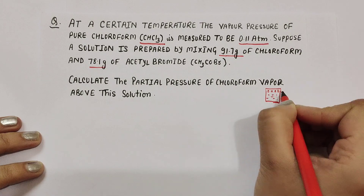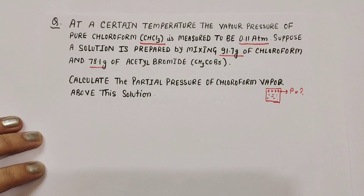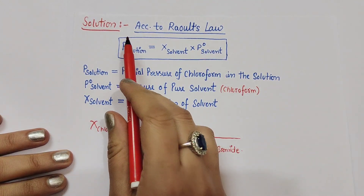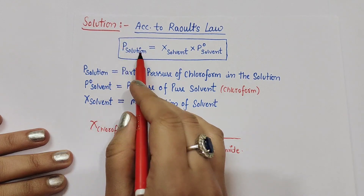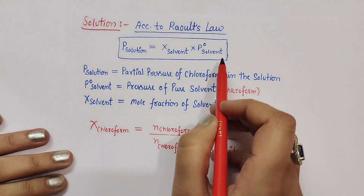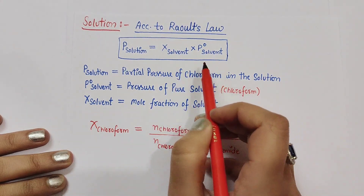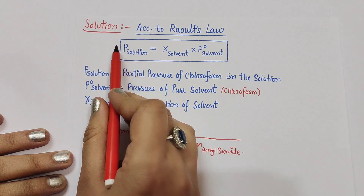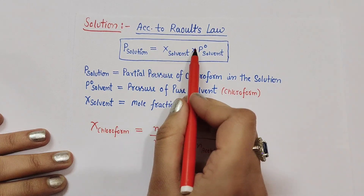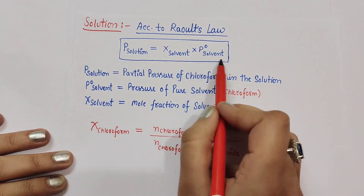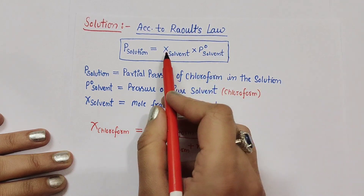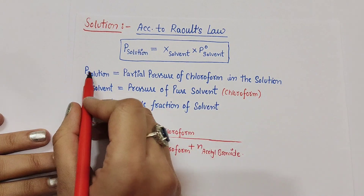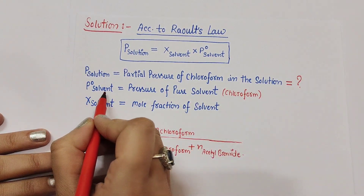According to Raoult's Law, the partial pressure of the solvent in the solution equals the pressure of the pure solvent multiplied by the mole fraction of the solvent. So P_solution = P°_solvent × X_solvent. Here, P_solution is the partial pressure of chloroform in the solution, which is what we need to find.